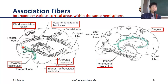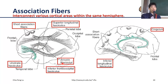For the connection between frontal and temporal lobes, we have the arcuate fasciculus — shaped like an arc. The arcuate fasciculus actually connects Broca's area with Wernicke's area.